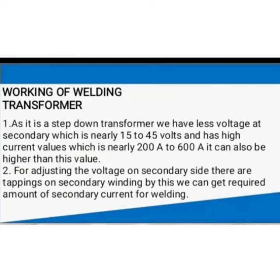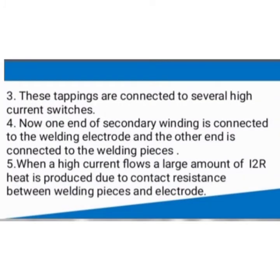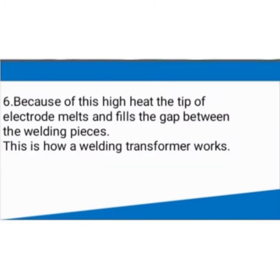Working of welding transformer. As it is a step-down transformer, we have less voltage at the secondary, which is nearly 15 to 45 volts, and has high current values which are nearly 200 amperes to 600 amperes — it can also be higher than this. For adjusting the voltage on the secondary side, there are tappings on the secondary winding. By this, we can get the required amount of secondary current for welding. These tappings are connected to several high current switches. One end of the secondary winding is connected to the welding electrode and the other end is connected to the welding pieces. When a high current flows, a large amount of heat is produced due to contact resistance between the welding pieces and the electrode. Because of this high heat, the tip of the electrode melts and fills the gap between the welding pieces.